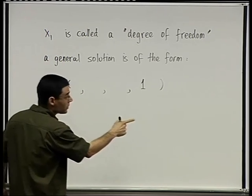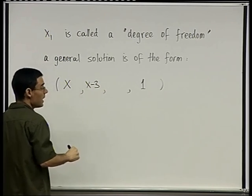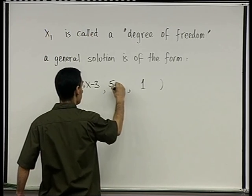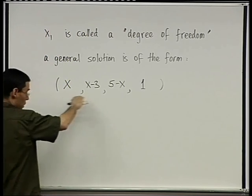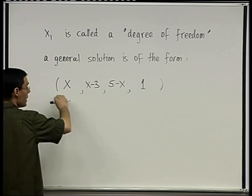But then it fixes the other two. So x2 is going to be x minus 3, and x3 is going to be 5 minus x. Do you agree?